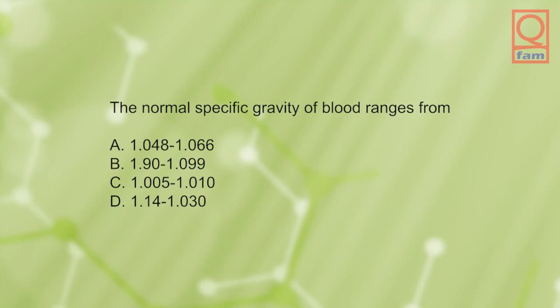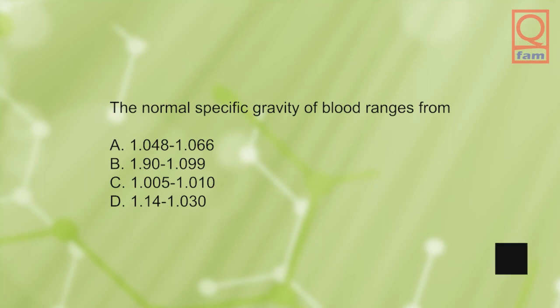The normal specific gravity of blood ranges from: A) 1.048 to 1.066, B) 1.90 to 1.099, C) 1.005 to 1.010, D) 1.14 to 1.030. The answer is A, 1.048 to 1.066.